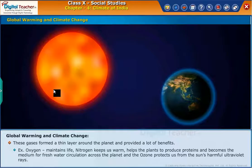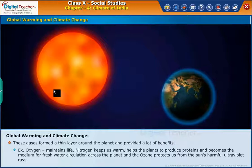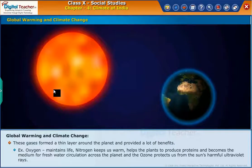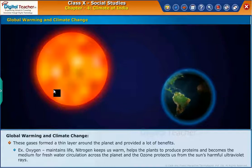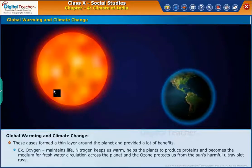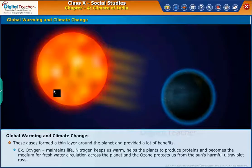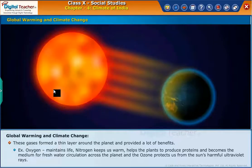For example, oxygen maintains life. Nitrogen keeps us warm, helps the plants to produce proteins, and becomes the medium for fresh water circulation across the planet. And the ozone layer protects us from the sun's harmful ultraviolet rays.